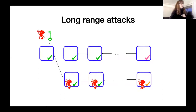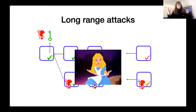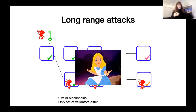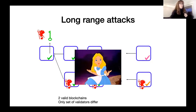This is a very problematic attack because users who have been offline for a long period of time will wake up and see two chains. They know the validators were honest in the past, but they don't know which chain is the honest one — the pink or the orange validators. Because the two chains look perfectly valid and the only difference is the set of validators, there is no way to determine which is the right chain. This has been a very concerning attack in the proof-of-stake community.